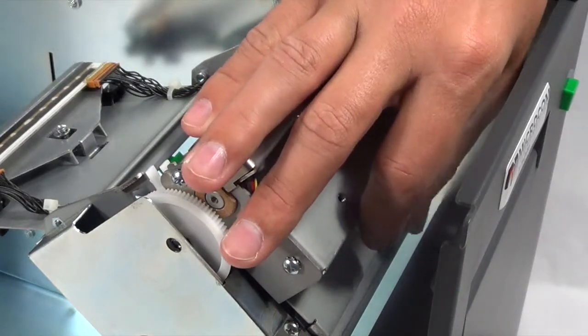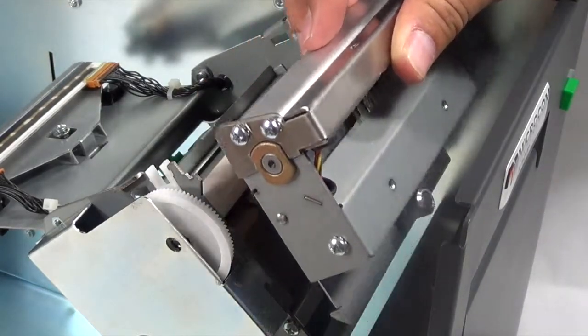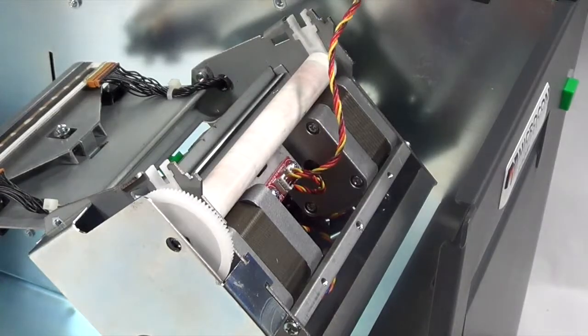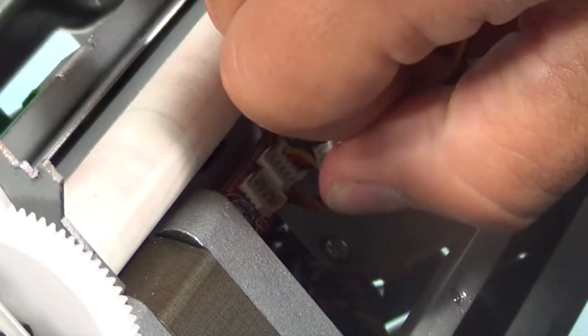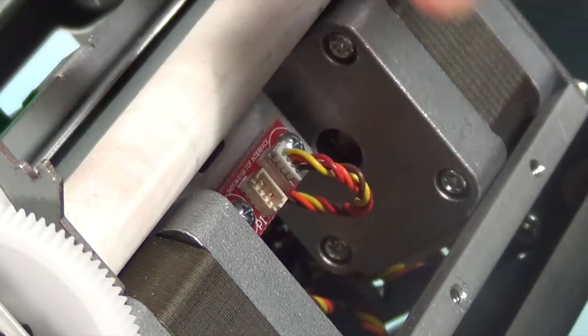Unscrew the thumb screw located below the cutter assembly and lift the cutter assembly. Carefully disconnect the cutter motor cable from the interface board.